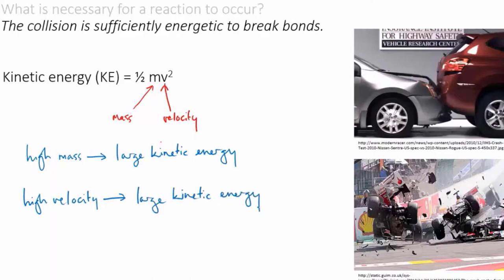It's the same with molecules. Heavy, fast molecules collide with greater energy than light, slow molecules. Now for a given reaction we can't do anything about the mass of the molecules. It's fixed. So the variable we're really interested in is how fast the molecules are going.